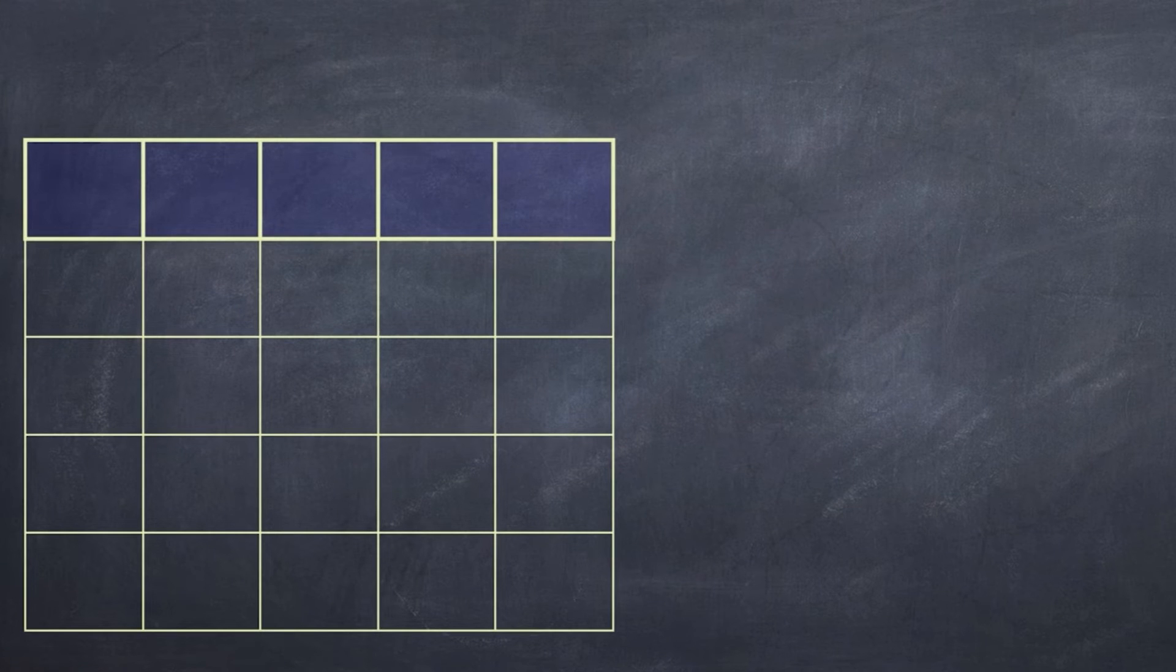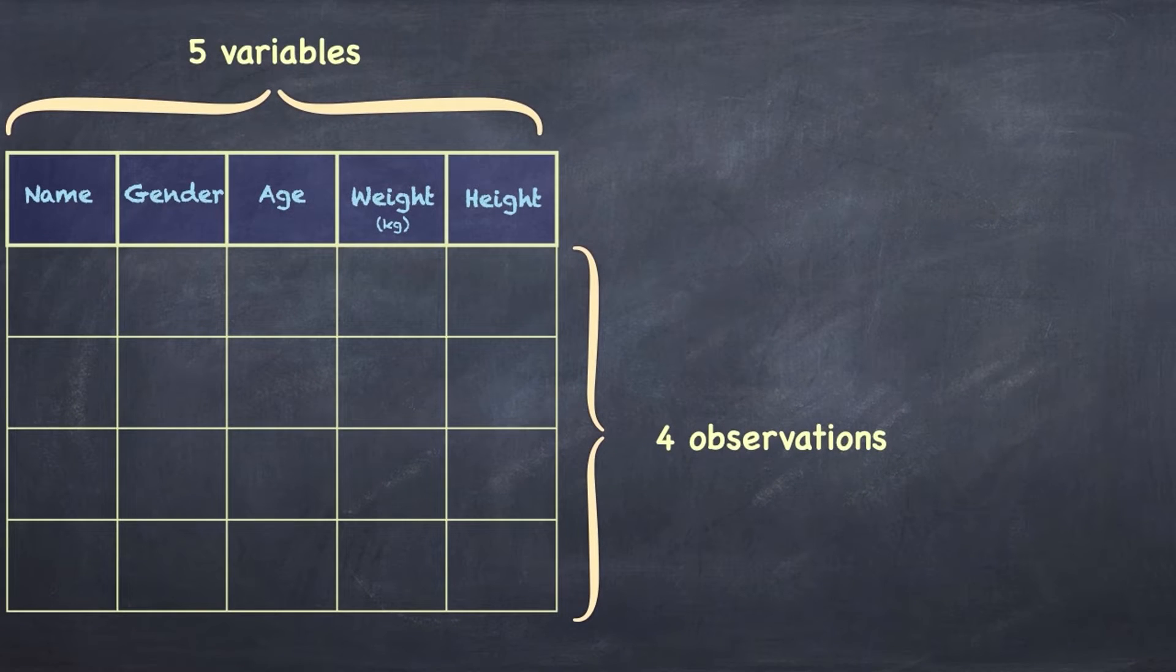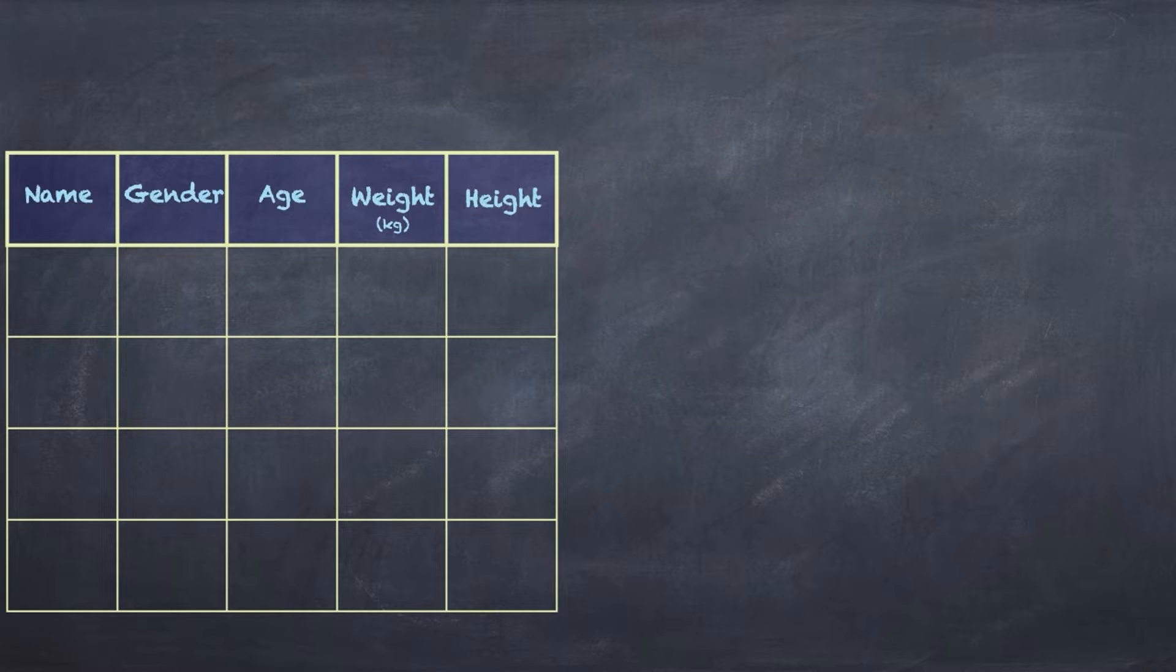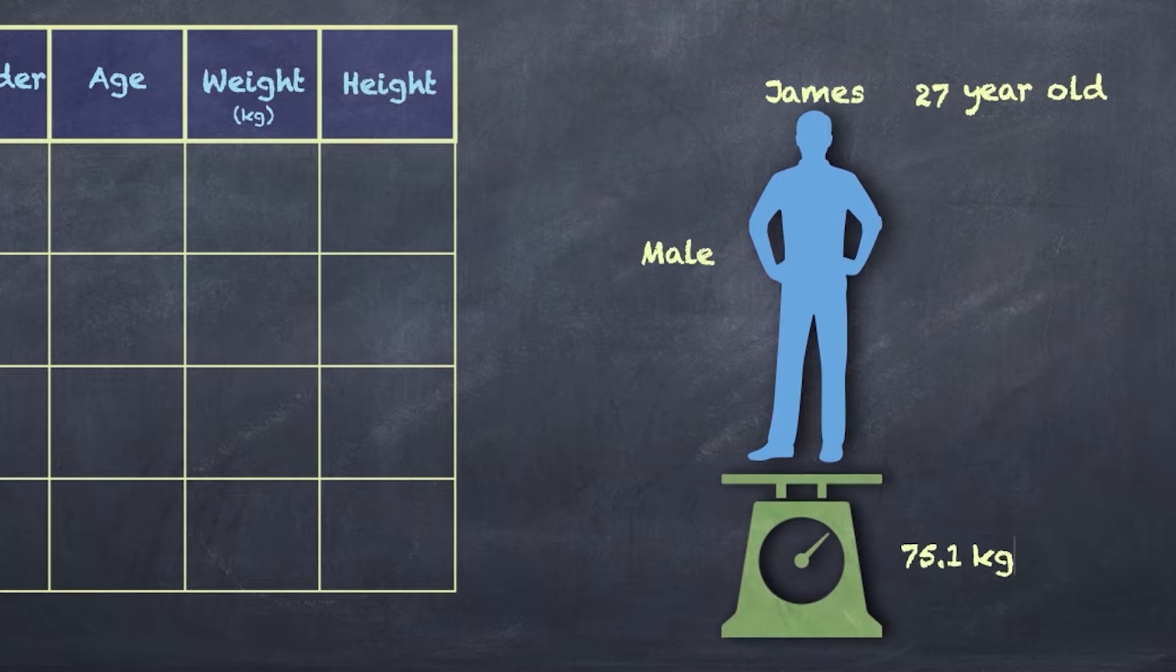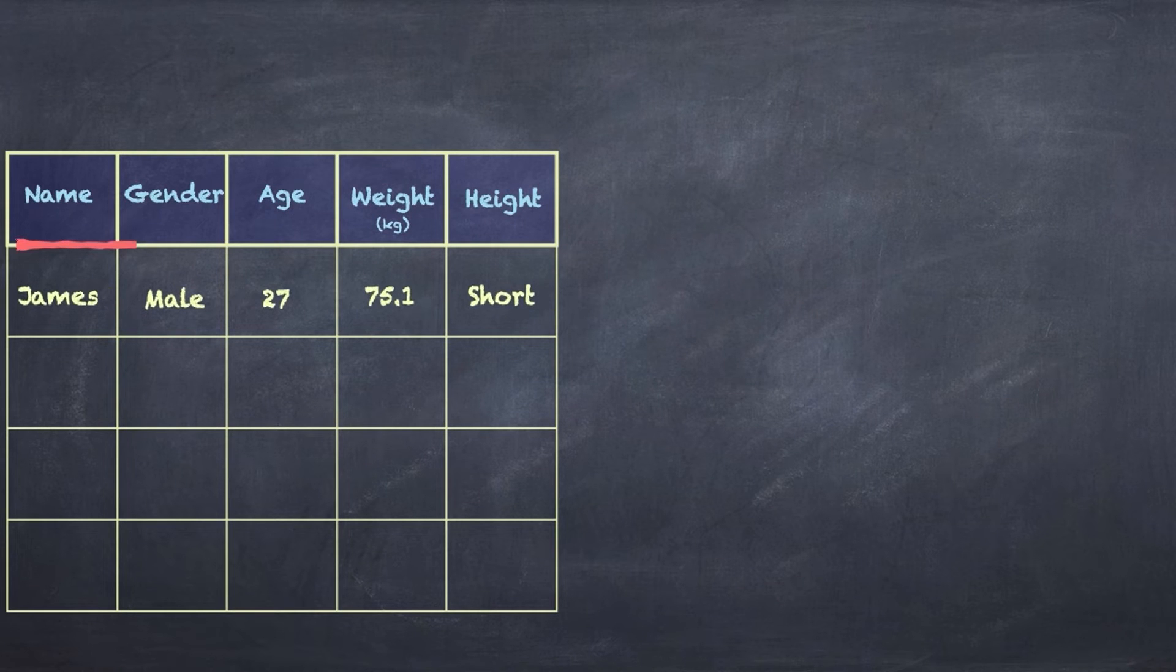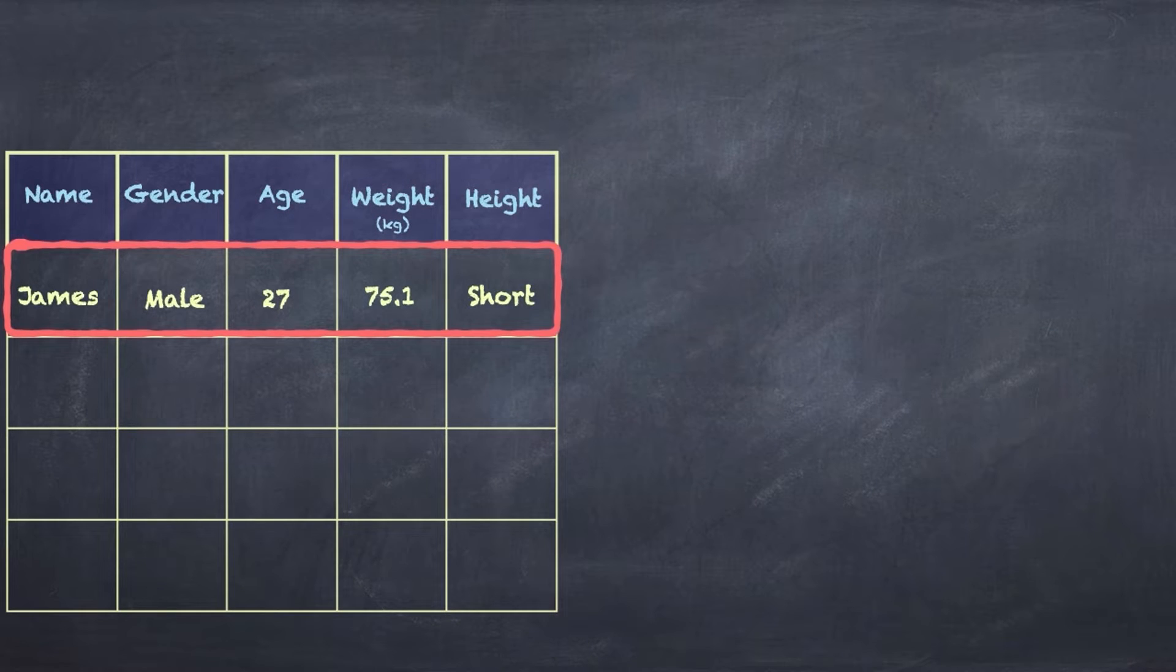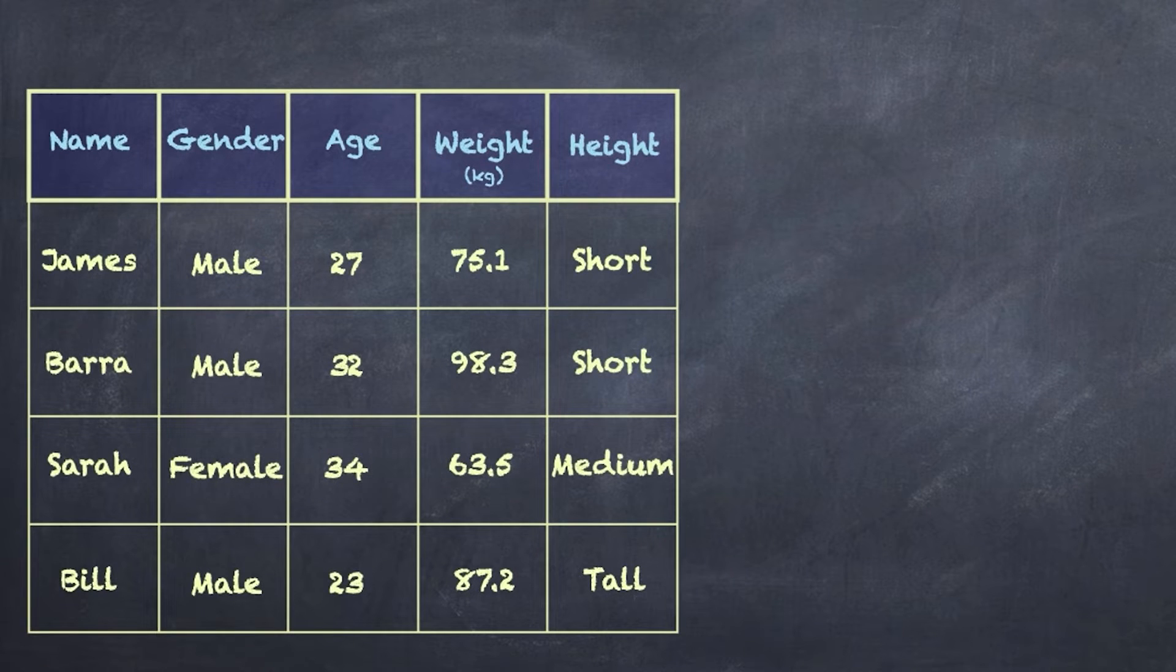In a typical data set, we've got something like a spreadsheet. In this spreadsheet, we've got columns, and our columns are our variables. In this case, we've got five variables, and our rows contain our observations. We've got four observations here. What do I mean by observations? Let's talk about someone called James. James has got certain characteristics that we're interested in. He's a 27-year-old male. He weighs 75.1 kilograms. He's been categorized as short. And together, we call all of this information about James an observation. We store that information as data under the appropriate column headings, or variable headings. And, of course, we can add as many observations as we want, and this is what makes up our data set.